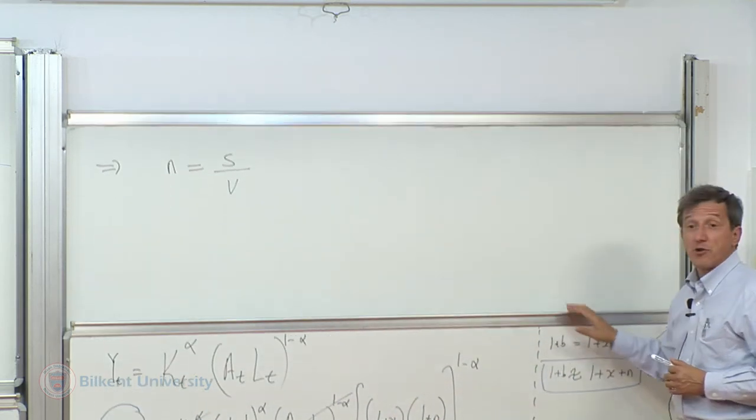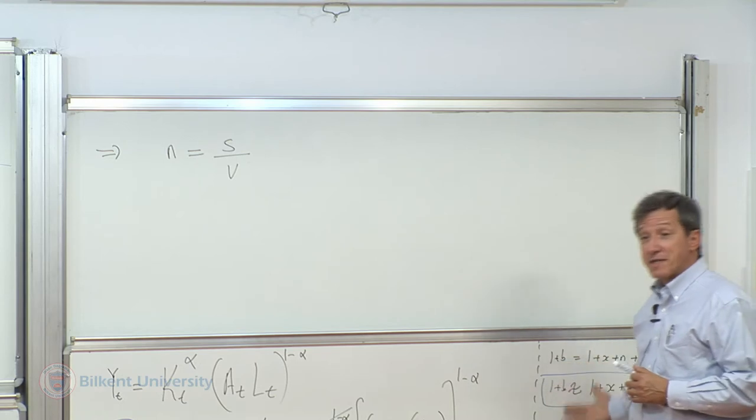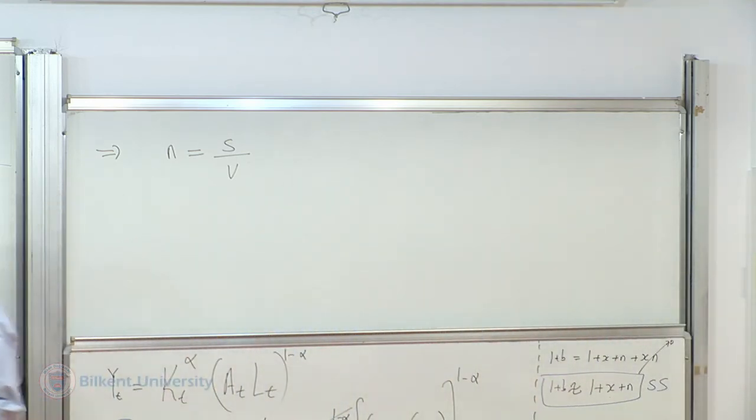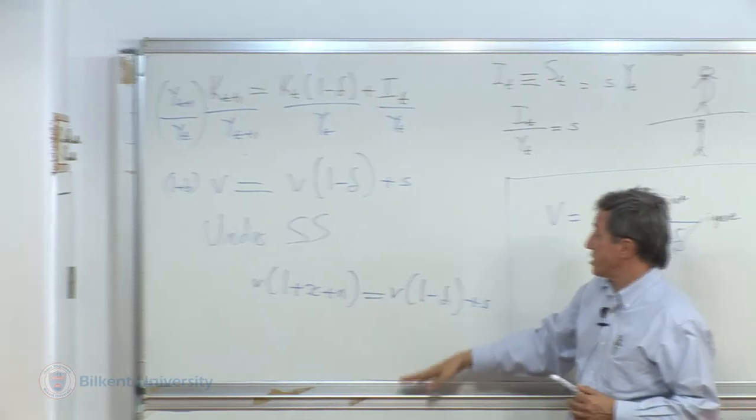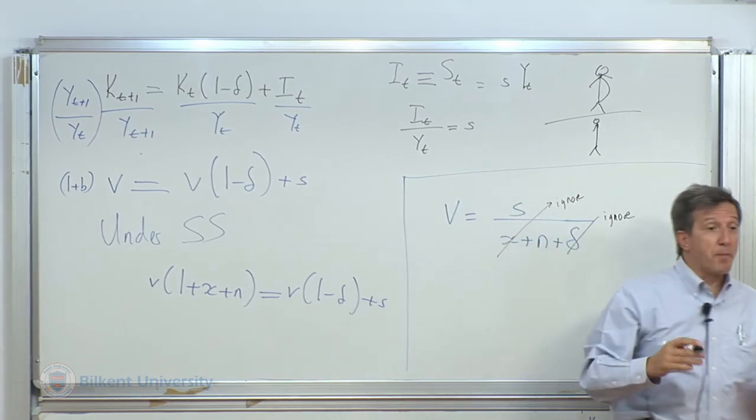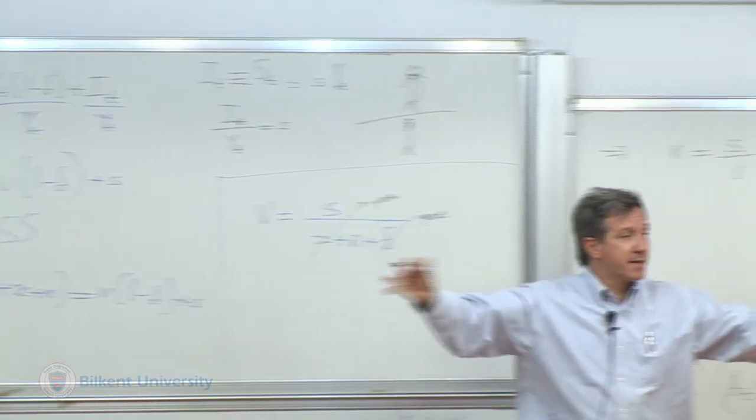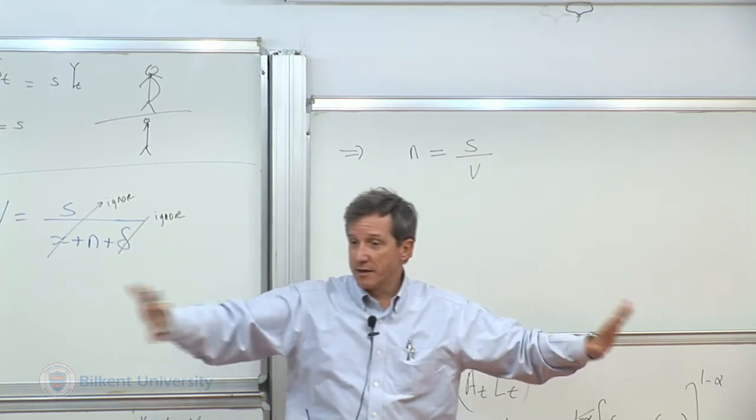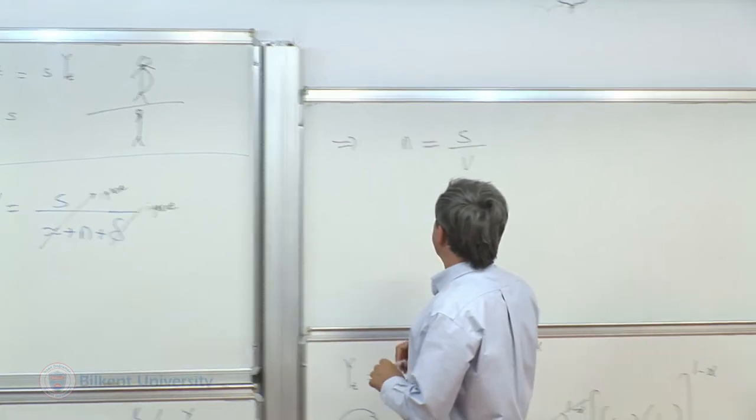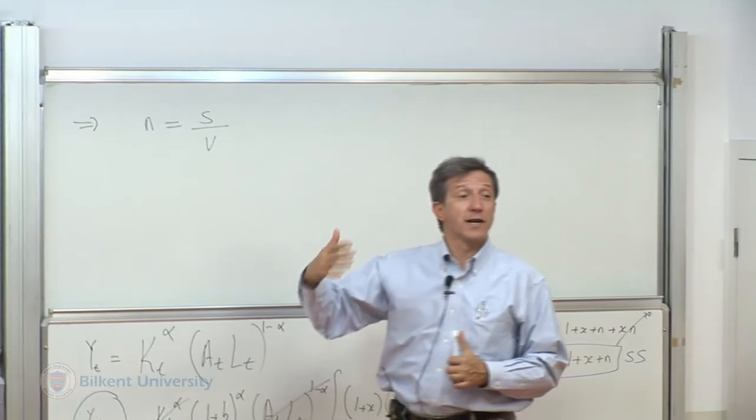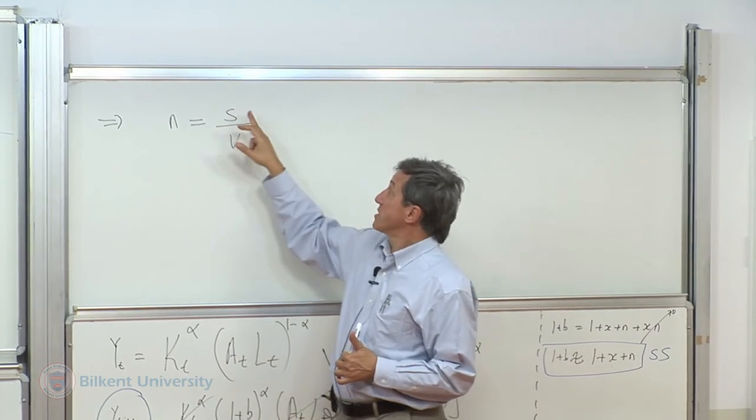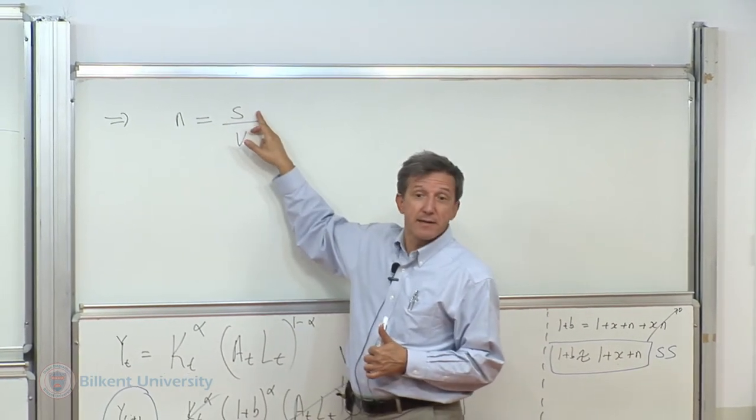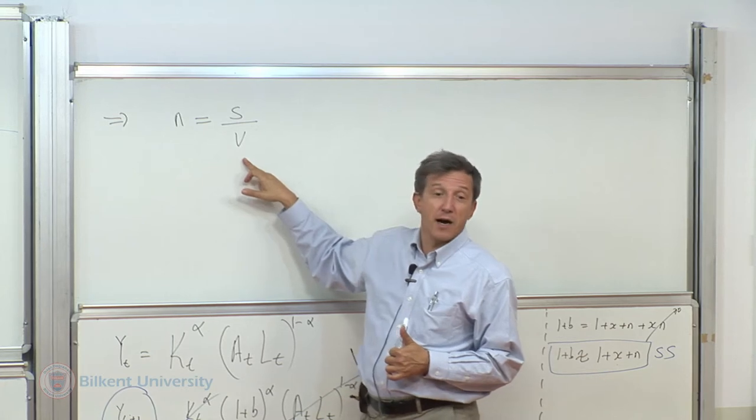Then we tried to understand that definition. We added a new assumption, added new variables, and we reached a point after eliminating the excess baggage from our modeling system. We said that under long run equilibrium, the population growth rate must be equal to saving rate divided by the capital output ratio.